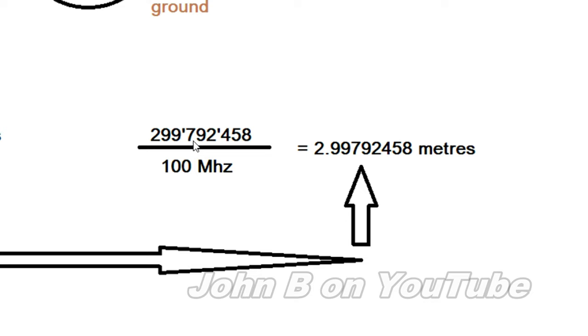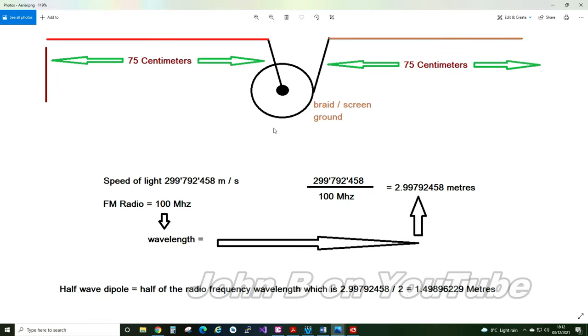So 299,792,458 divided by 100 million equals 2.997 meters. That's the wavelength of FM radio up at 100 megahertz. To make a half wave dipole which is what you saw hanging on the wall we want half of the wavelength. So half of three meters is one and a half meters.